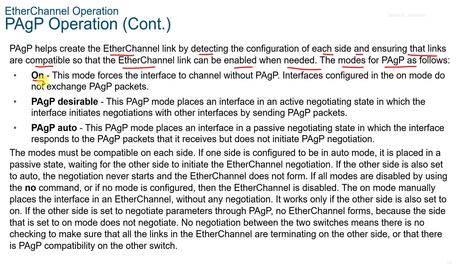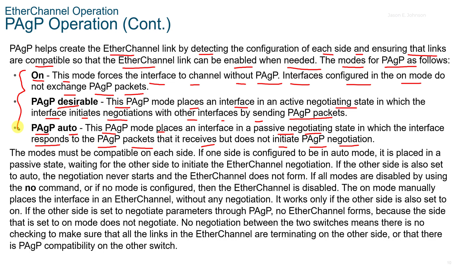The modes of PAGP are as follows. ON: This mode forces the interface to channel without PAGP. Interfaces configured in ON mode do not exchange PAGP packets. DESIRABLE: This mode places an interface in an active negotiating state in which the interface initiates negotiations with other interfaces by sending PAGP packets. AUTO: This mode places an interface in a passive negotiating state in which the interface responds to PAGP packets that it receives but does not initiate PAGP negotiation. These modes must be compatible on each side. If one side is configured to AUTO mode, it's placed in a passive state waiting for the other side to initiate negotiation. If the other side is also set to AUTO, the negotiation never starts and the EtherChannel does not form.